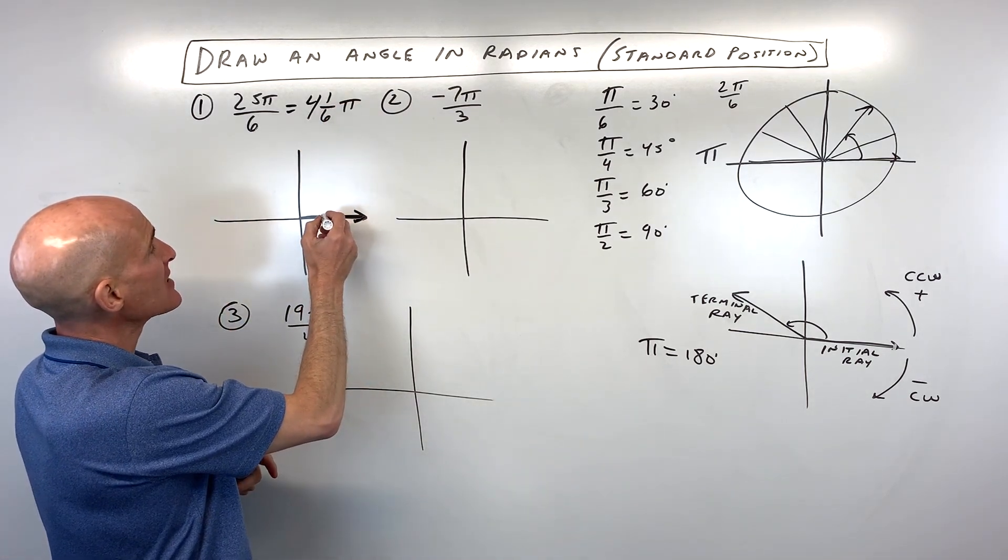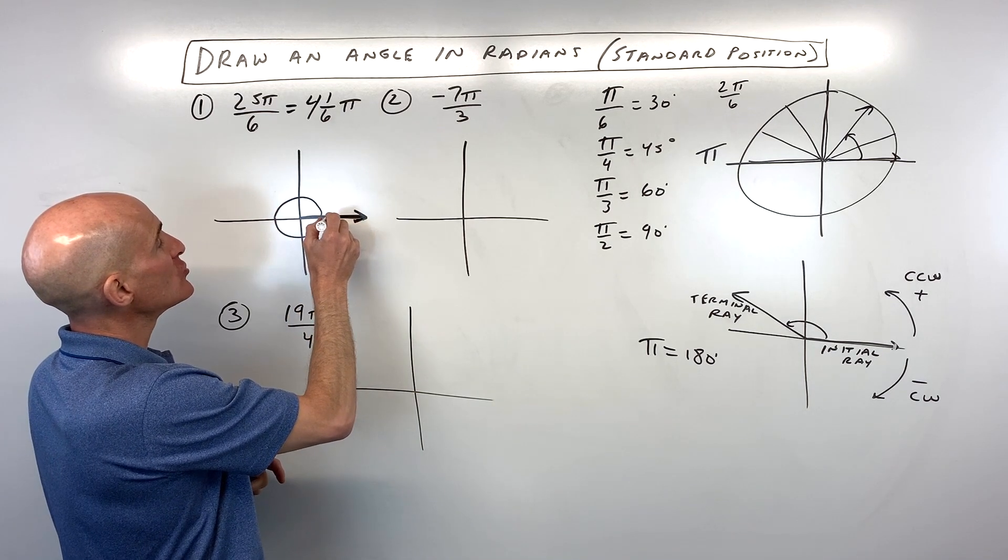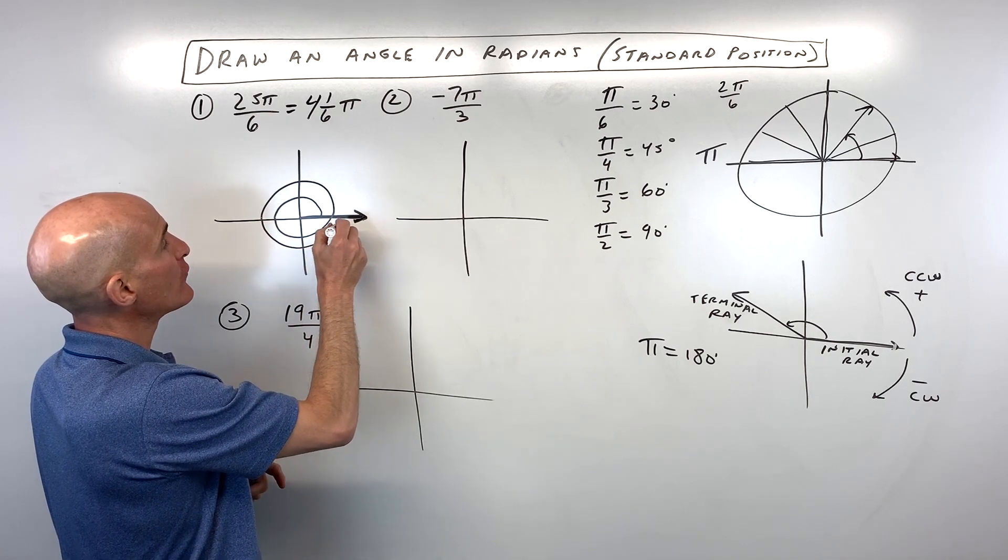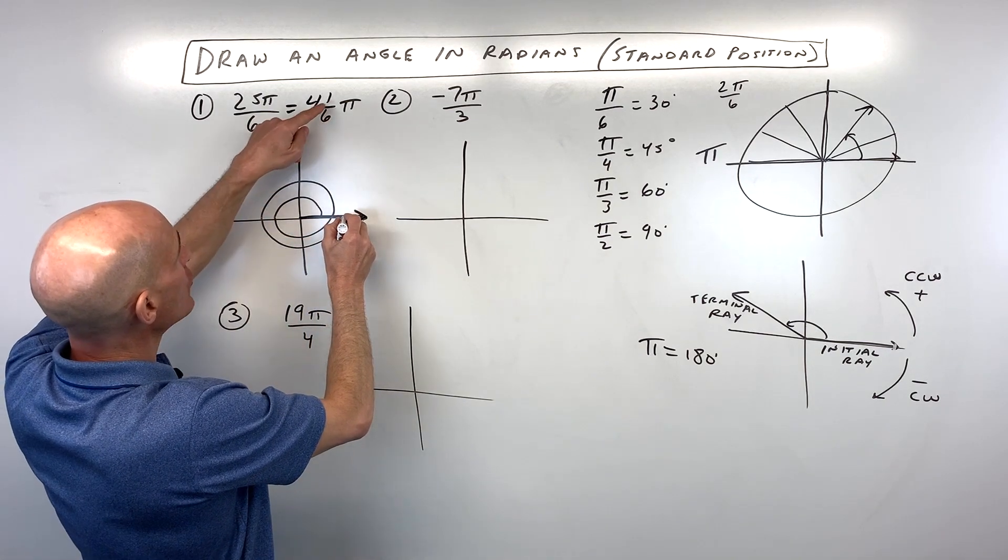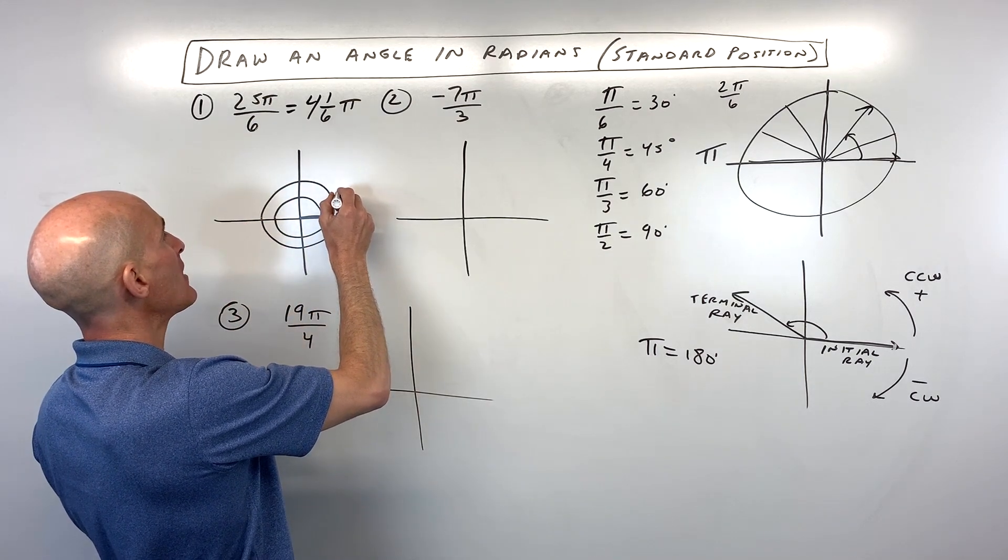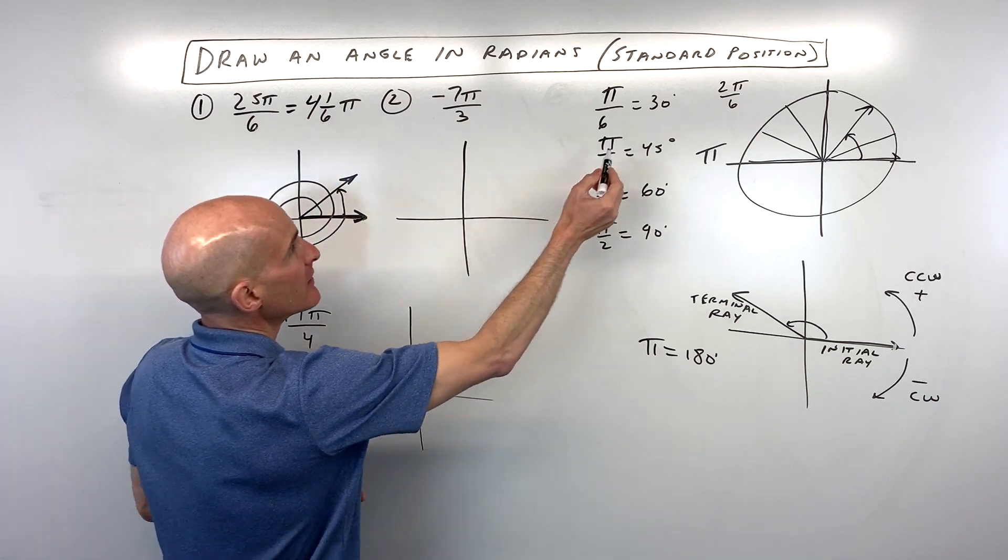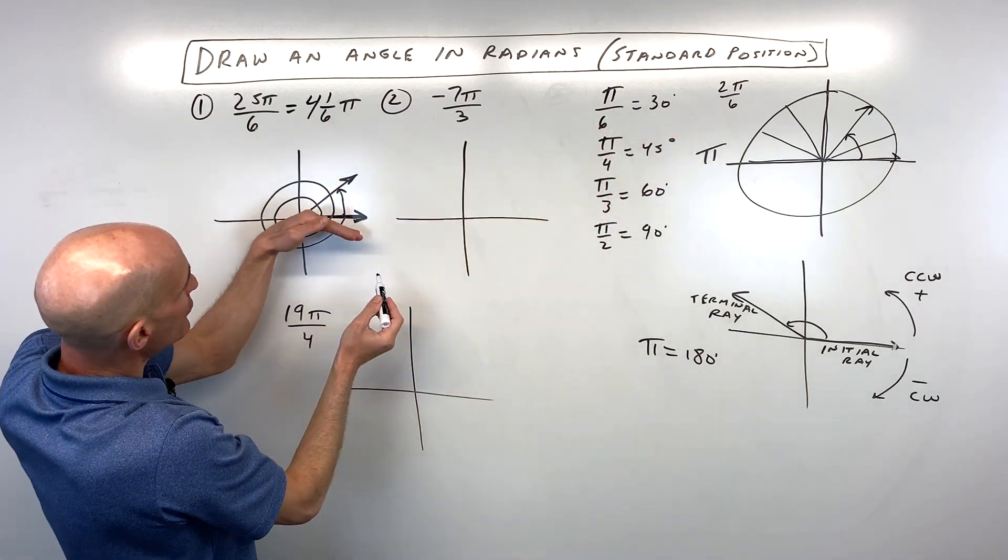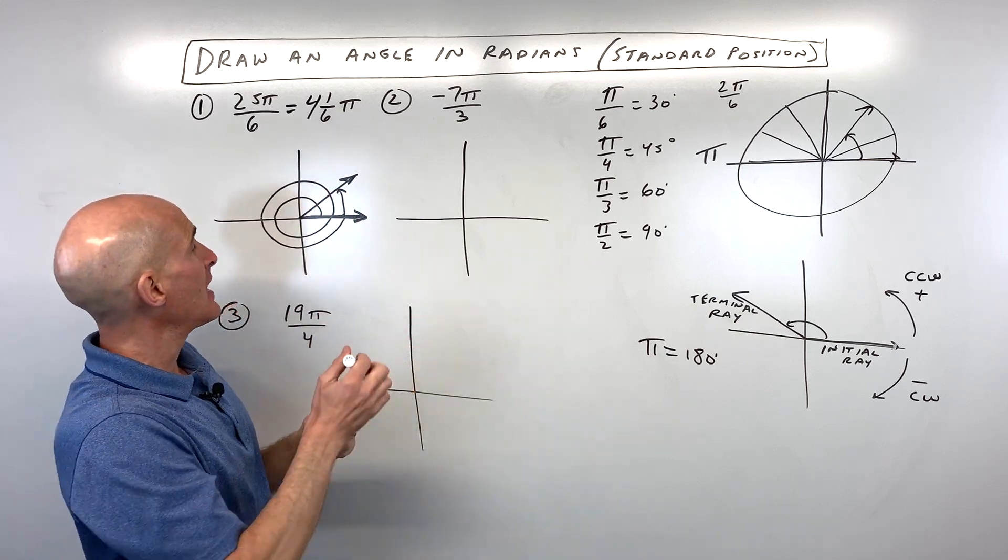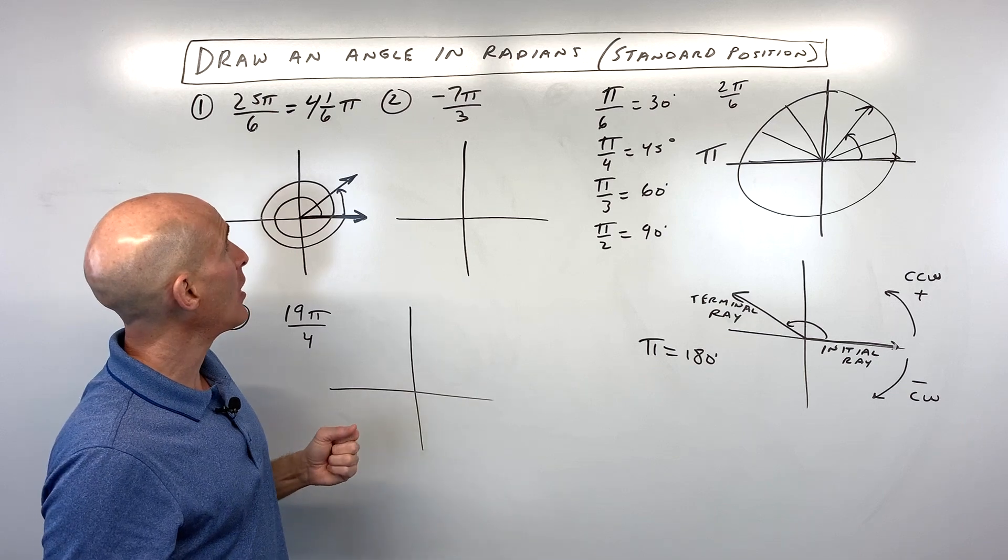Well, we know that pi is 180 degrees. So that's going to be like 1 pi, 2 pi, 3 pi. See, I'm going half a revolution. 4 pi. And now we're going to go 1 6th of pi. So 1 6th of this half revolution, which is going to be right about there. Now, it's helpful to remember that pi over 6 is 30. So you know what 30 degrees is. You can go just a little bit past and you've got it. Now, we have our arrow to show the direction of rotation. And that will help as well.